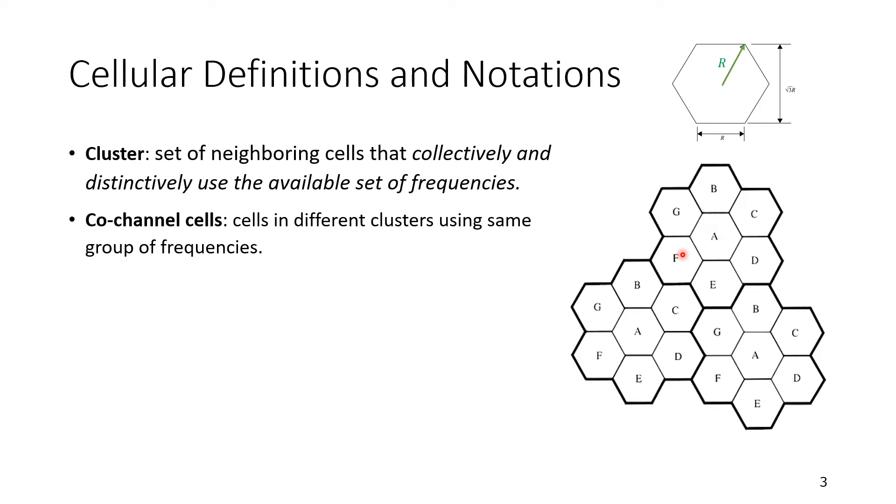Once we have defined clusters, we also can define co-channel cells. Co-channel cells are cells in different clusters with the same group of frequencies. For example, we have A here, we have A here, and we have A here. These are co-channel cells. Similarly, we can identify, for example, E here, and E are co-channel cells.